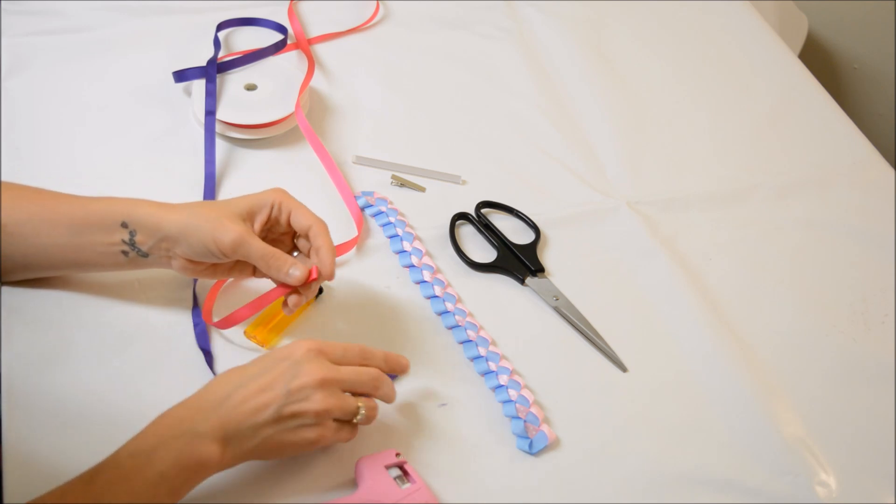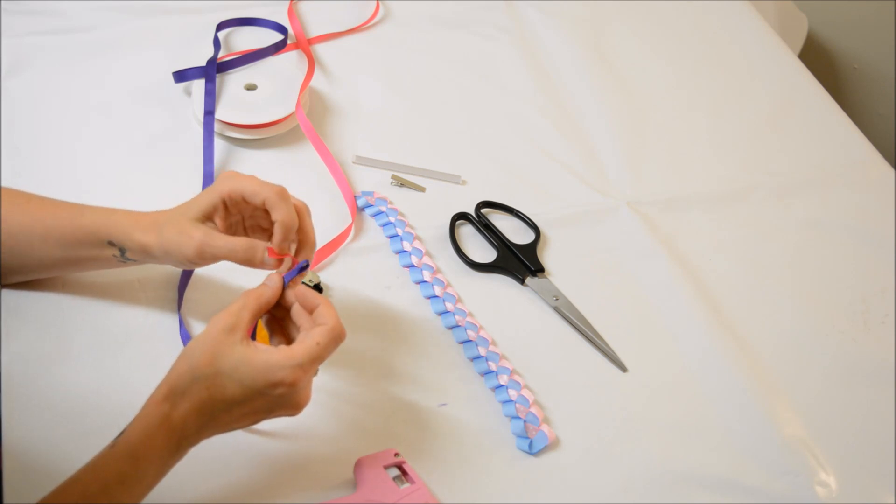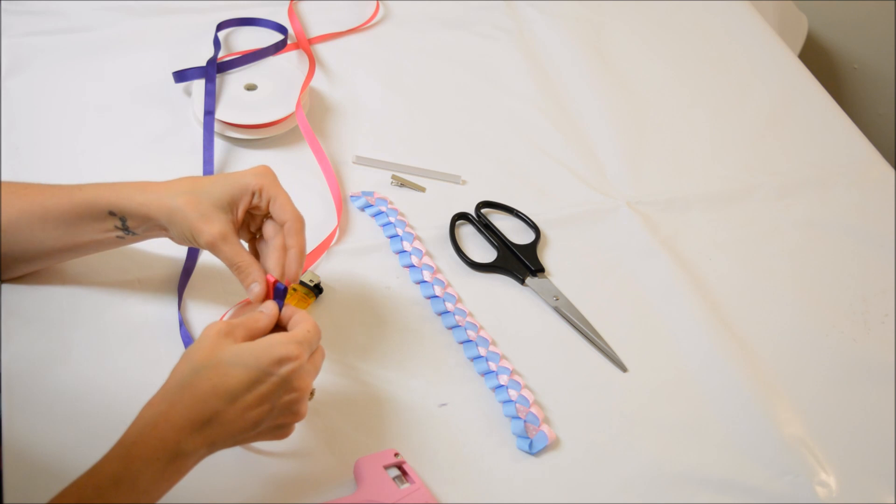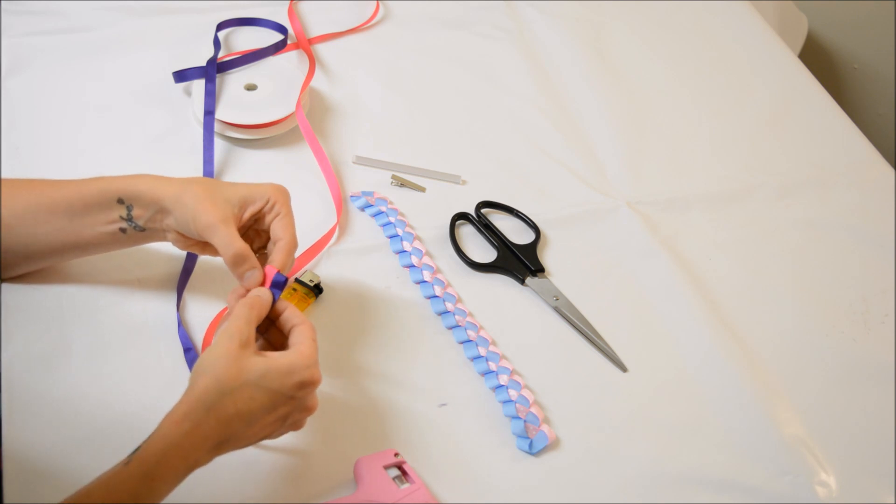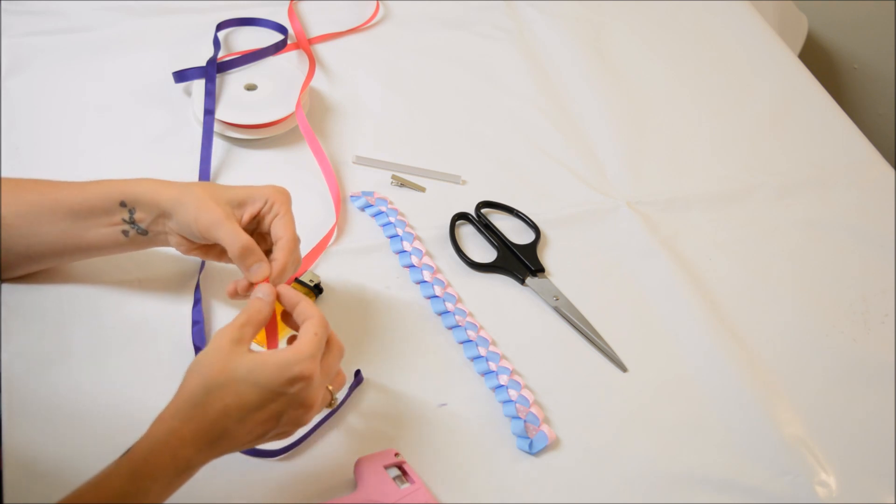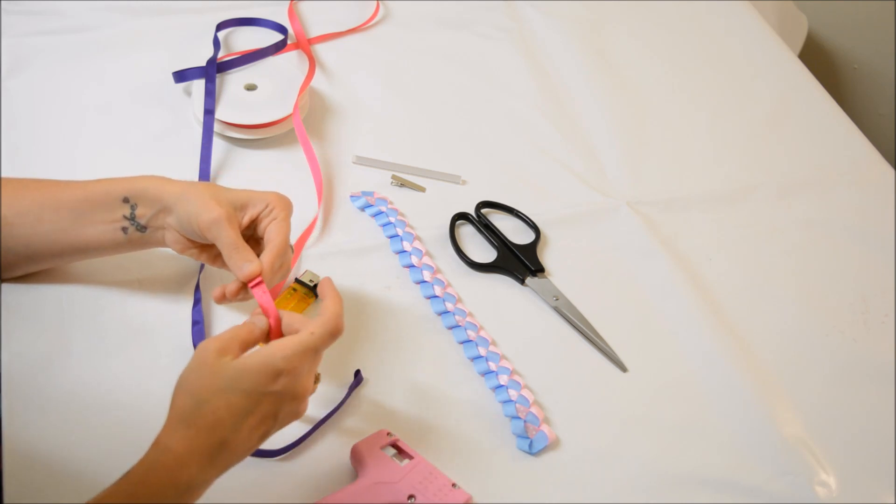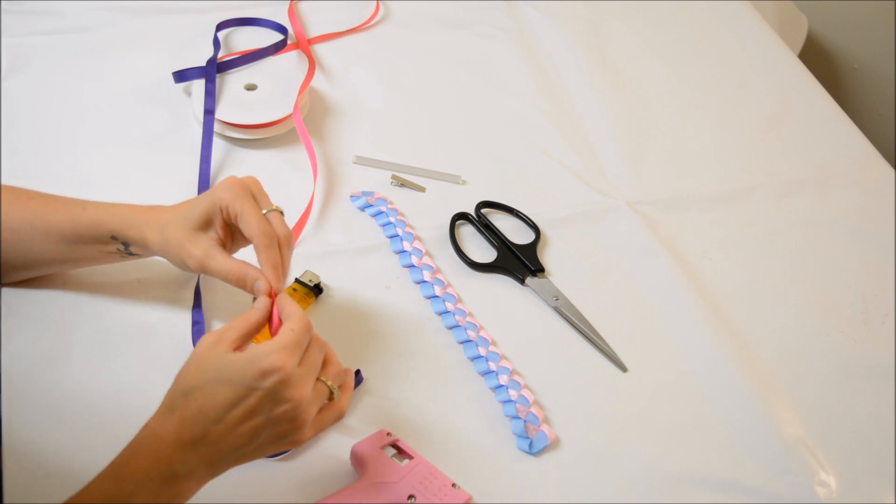Now you want to take your second ribbon and do the same thing. For this I tend to measure using the one I've already done. And again, apply a little bit of glue and fold that ribbon down.